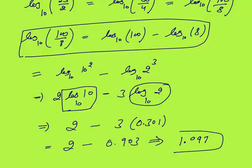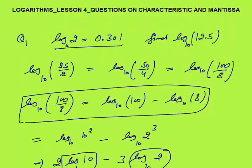So the final answer: log 12.5 to base 10 = 1.097. In this way we use the values of log 2 and log 3 depending on the question.